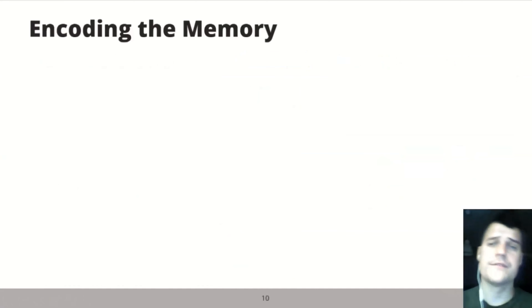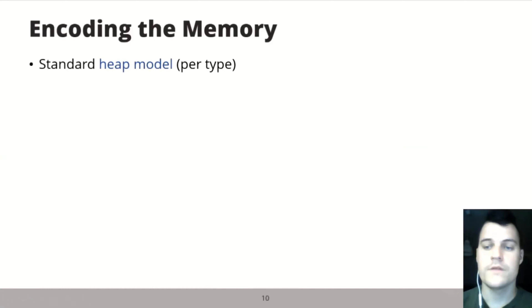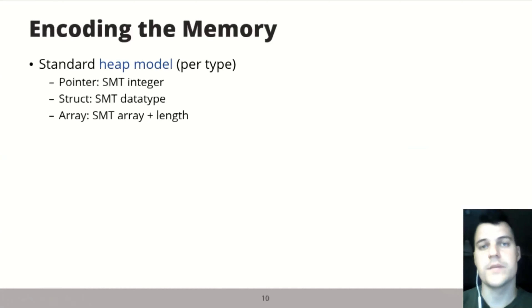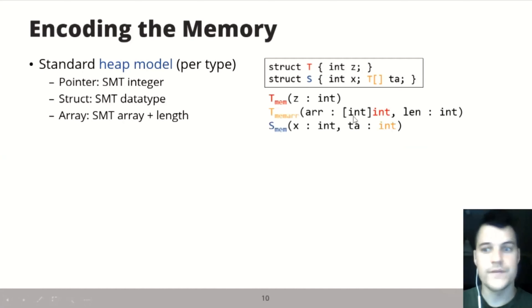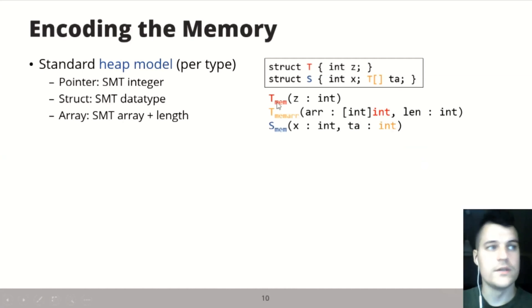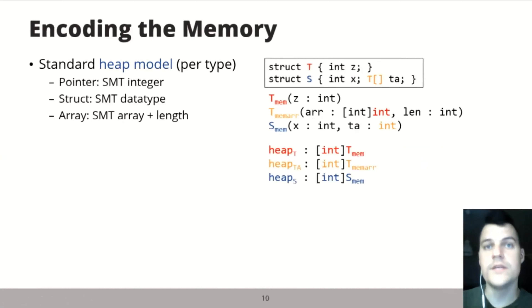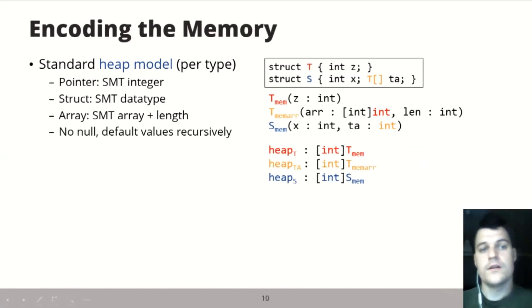Let's start with the formalization of memory first, using a standard heap model. We assign a separate heap per type because Solidity is a strongly typed language. Pointers are simply SMT integers, structs are SMT data types with their fields inside, and arrays are data types with the actual SMT array and the length. For example, for struct T with an integer and struct S with an integer and a T array, the T array maps from integer to integer because these are pointers, not the actual T instances. For each type, we have an actual heap to dereference these pointers.